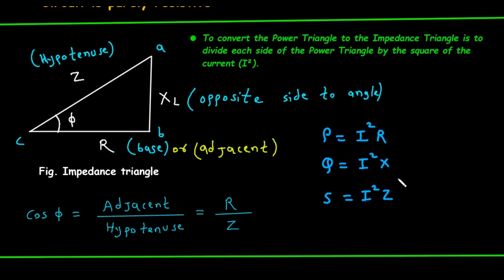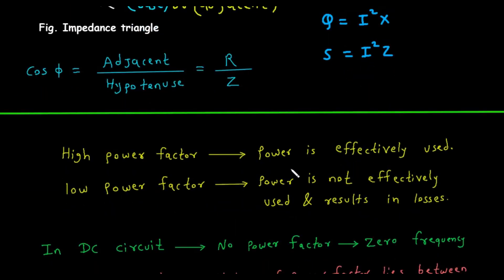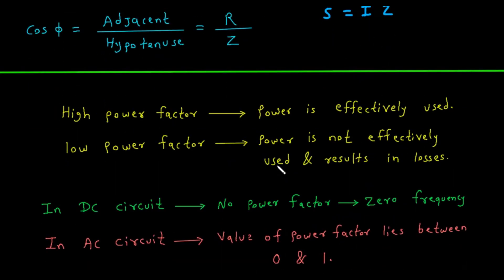So, why is all of this important? The value of the power factor has significant practical implications. A high power factor, meaning a value close to 1, indicates that power is being used effectively — most of the power being supplied to the circuit is being converted into useful work. On the other hand, a low power factor, meaning a value much less than 1, indicates that power is not being used effectively. A significant portion of the power is reactive power, which sloshes back and forth in the circuit without doing any real work. This leads to higher overall current, which in turn results in greater energy losses in the system, primarily as heat.